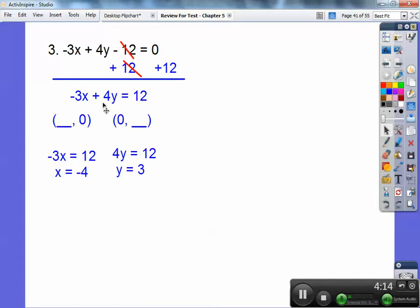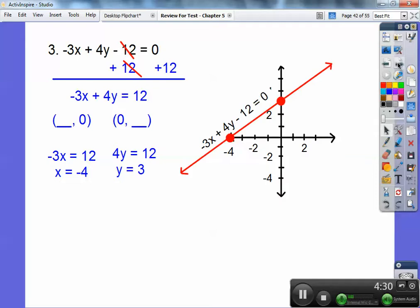So when y is 0, that goes away. You're left with negative 3x equals 12. Divide by negative 3. And 12 divided by negative 3 is negative 4. Okay, over here, when you let x be 0, the negative 3x goes away. And you're left with 4y equals 12 or y equals 3. Okay, you're going to graph those two points right there. Don't forget to label your line.